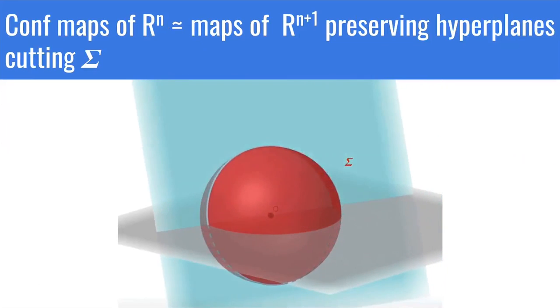The most general maps of R^{n+1} that preserve hyperplanes cutting sigma turn out to be projective transformations, sometimes called collineations. To represent these projective transformations, you need to introduce a new coordinate x_0 to talk about homogeneous coordinates of the space.